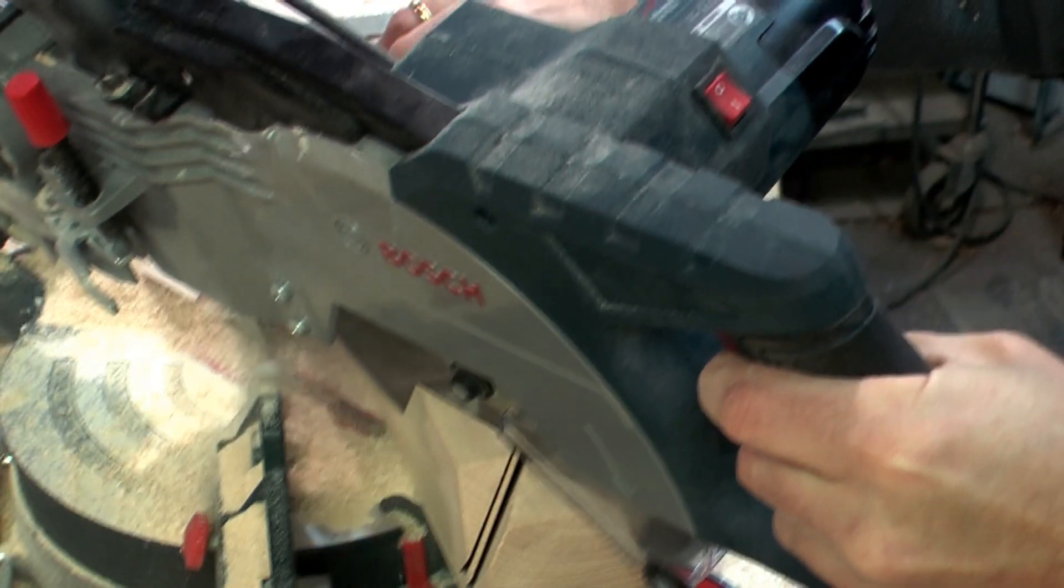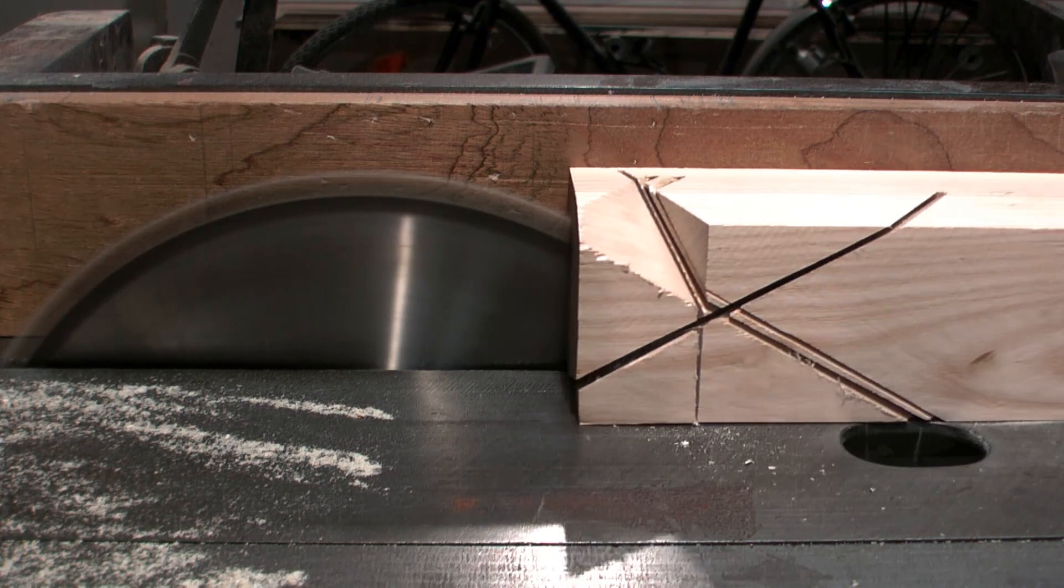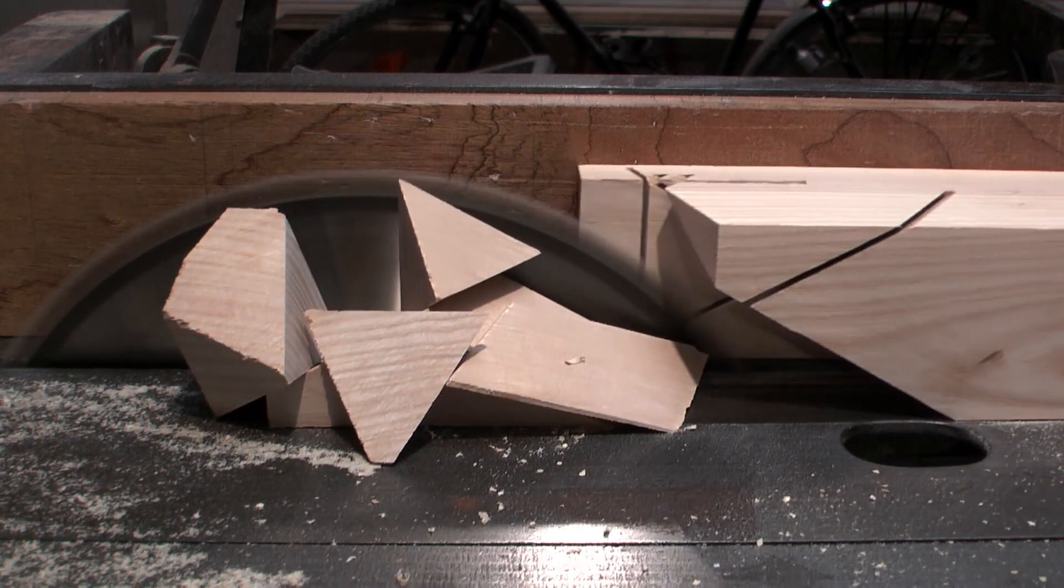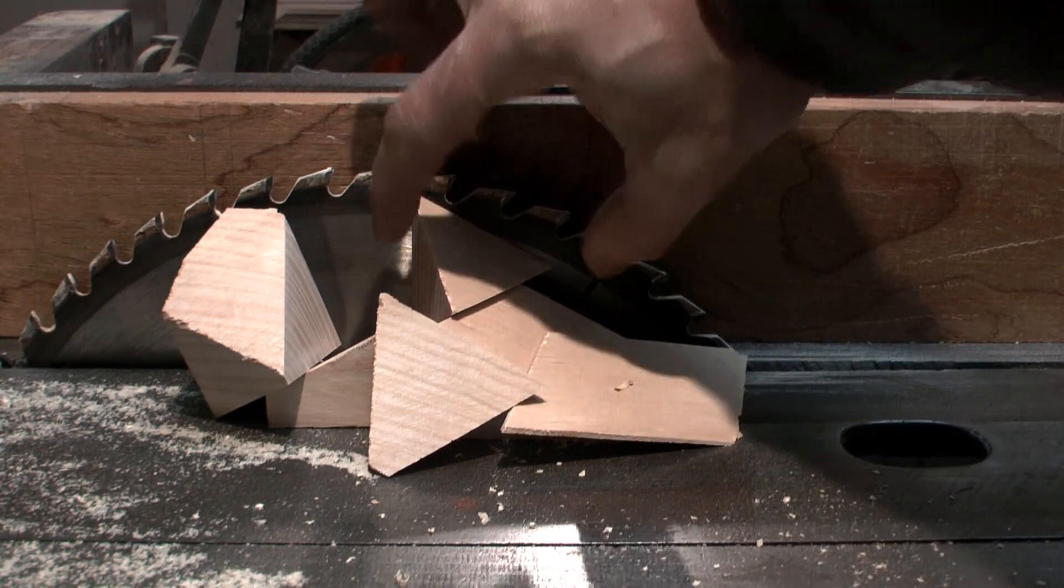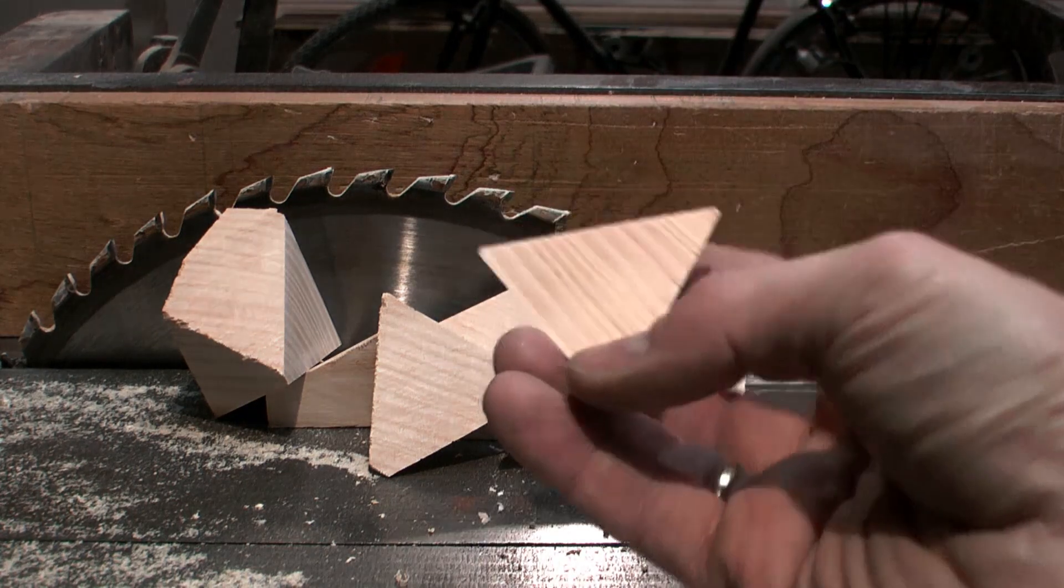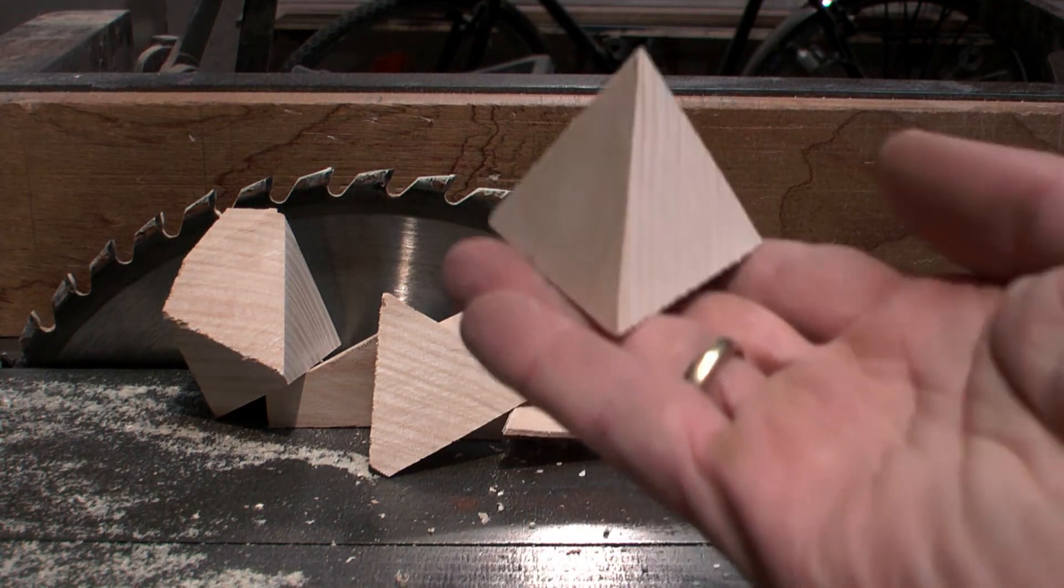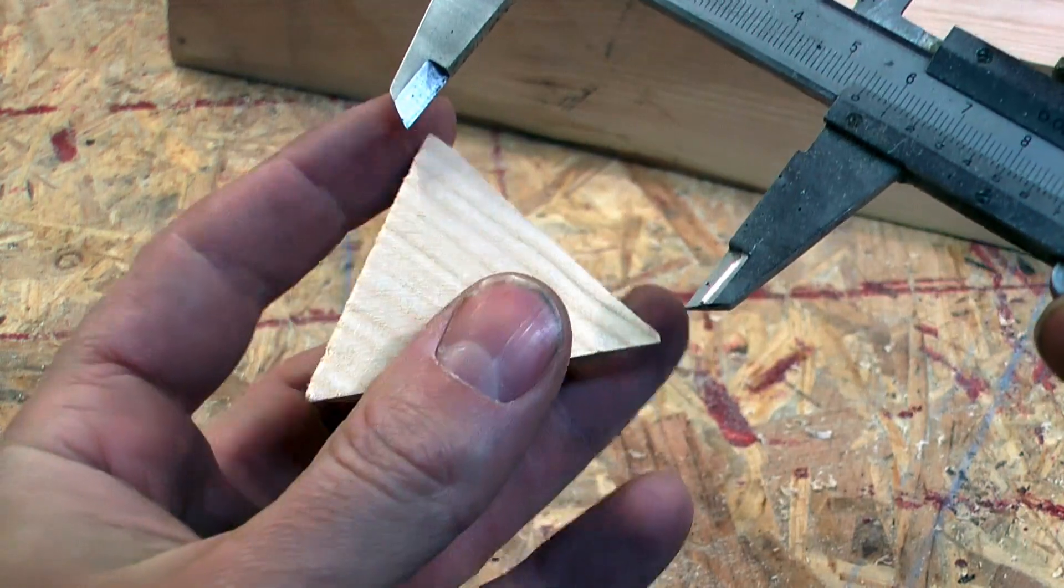The tetrahedron is still inside this block and needs to be cut free on the table saw. Here it is. It came out relatively precise. The differences were about 2%.